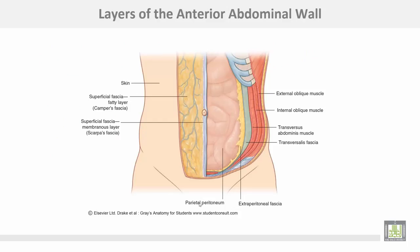This figure shows the layers of the anterior abdominal wall from outside to inside: the skin, then the superficial fascia subdivided into a fatty layer and a deep membranous layer or Scarpa's fascia. After that, the three muscles — the external oblique, the internal oblique, and the transversus abdominis muscle — lined by fascia transversalis, extraperitoneal fascia, and parietal peritoneum.